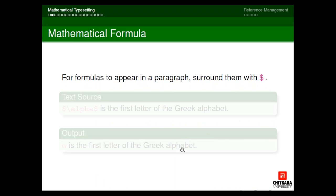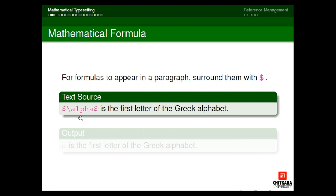If we write a mathematical formula the way we write text, it will always give you an error. Whenever you're going to write a formula in your paragraph or anywhere in your document, you always have to surround it with a dollar sign. Suppose you want to write X plus Y — you write a dollar at the beginning and a dollar at the end of the statement. For example, to write the Greek alphabet alpha, I give the command backslash alpha. Since alpha will not be written as such, I enclose it with a dollar sign.